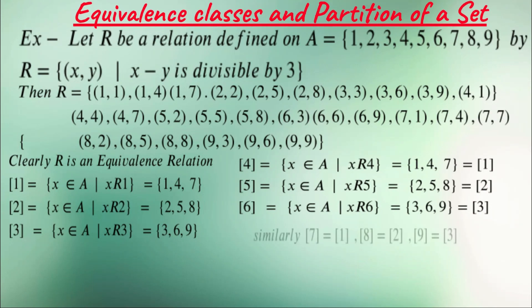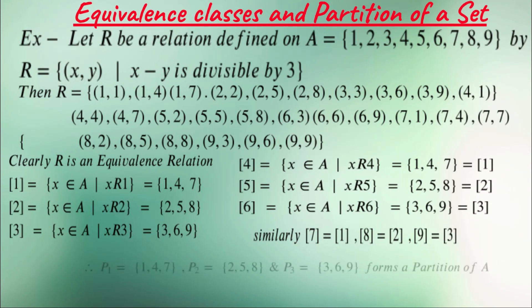Similarly, equivalence class of 7 is equivalence class of 1, equivalence class of 8 is equivalence class of 2, and equivalence class of 9 is equivalence class of 3. Here we get three sets: P1 = {1, 4, 7}, P2 = {2, 5, 8}, and P3 = {3, 6, 9}.